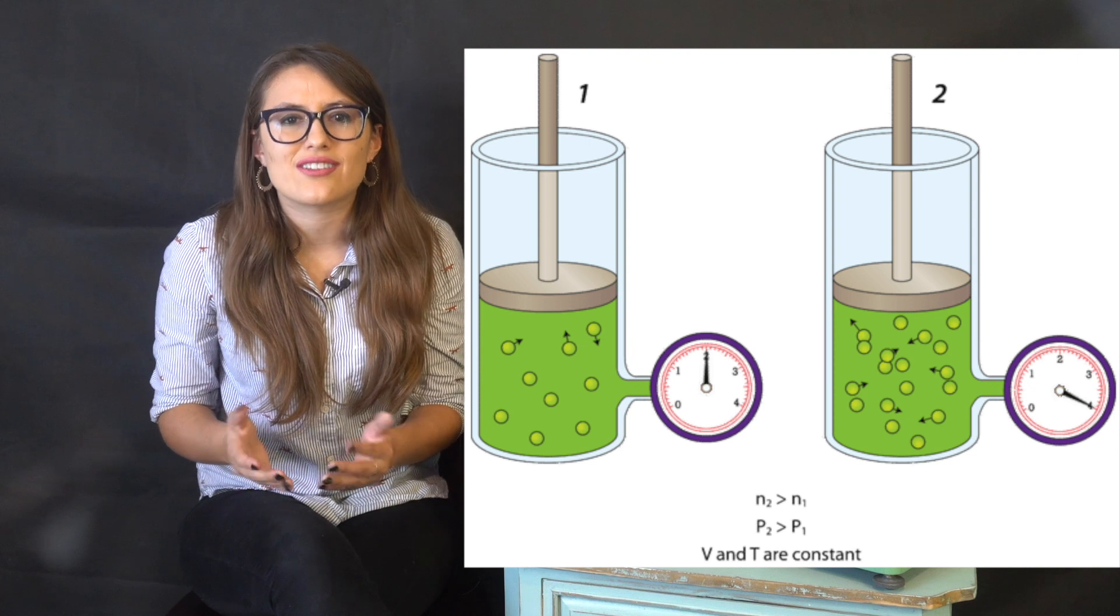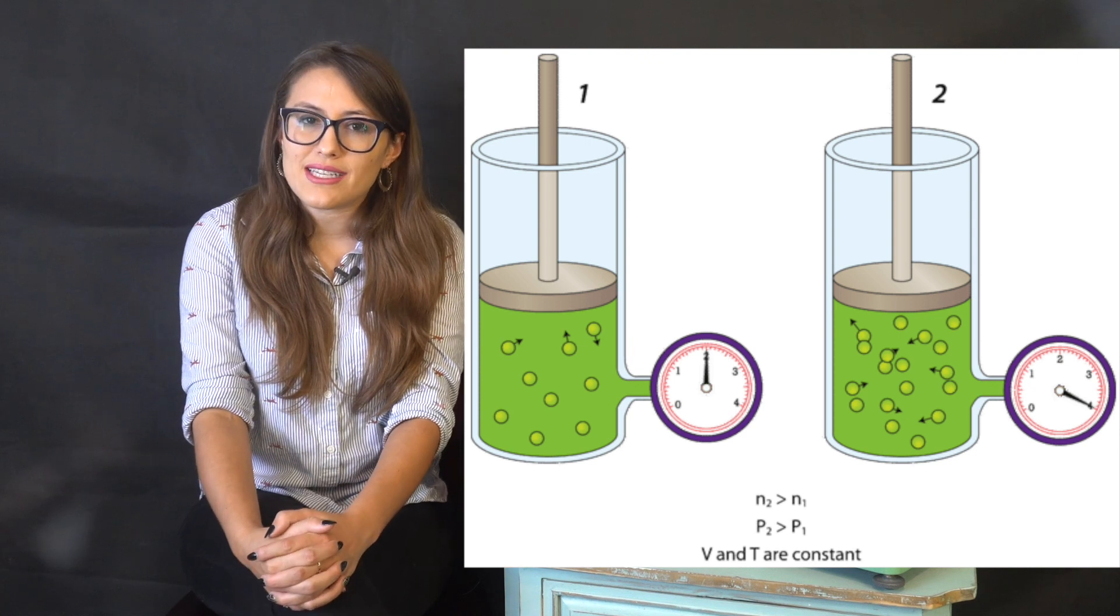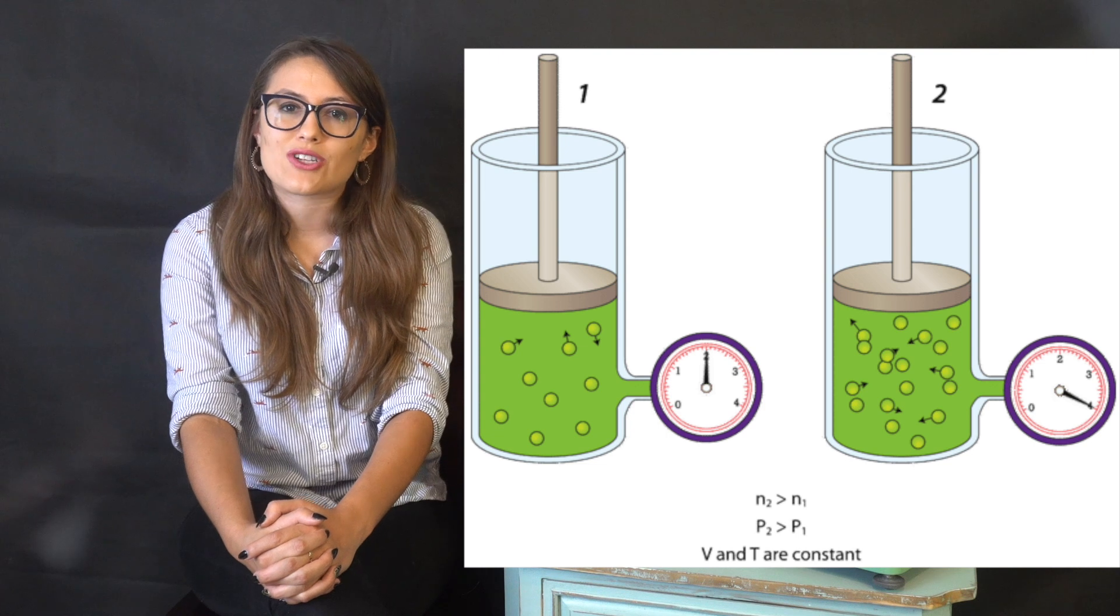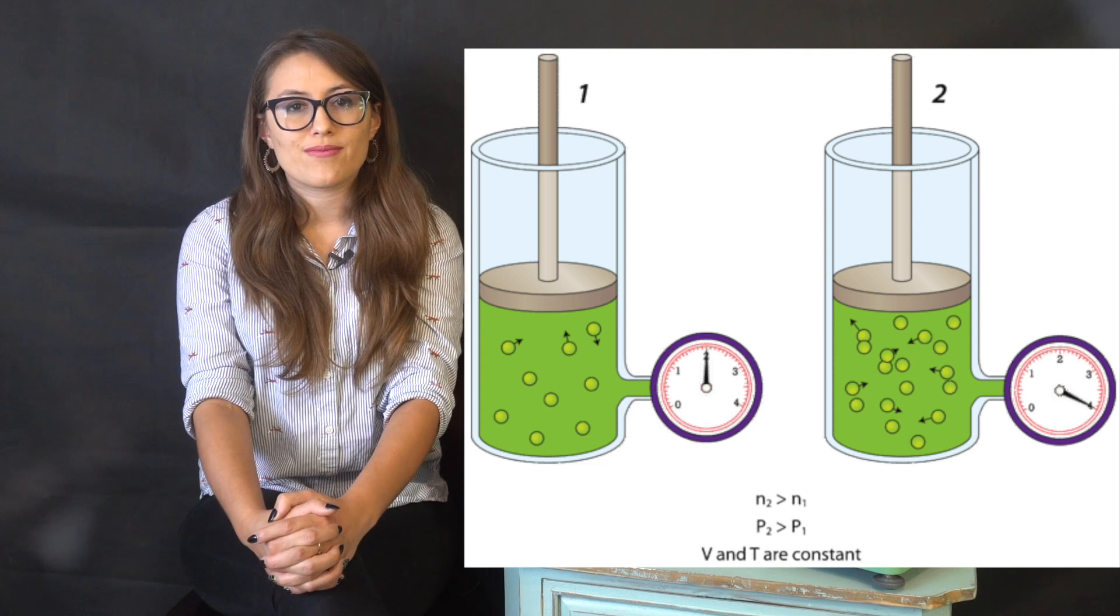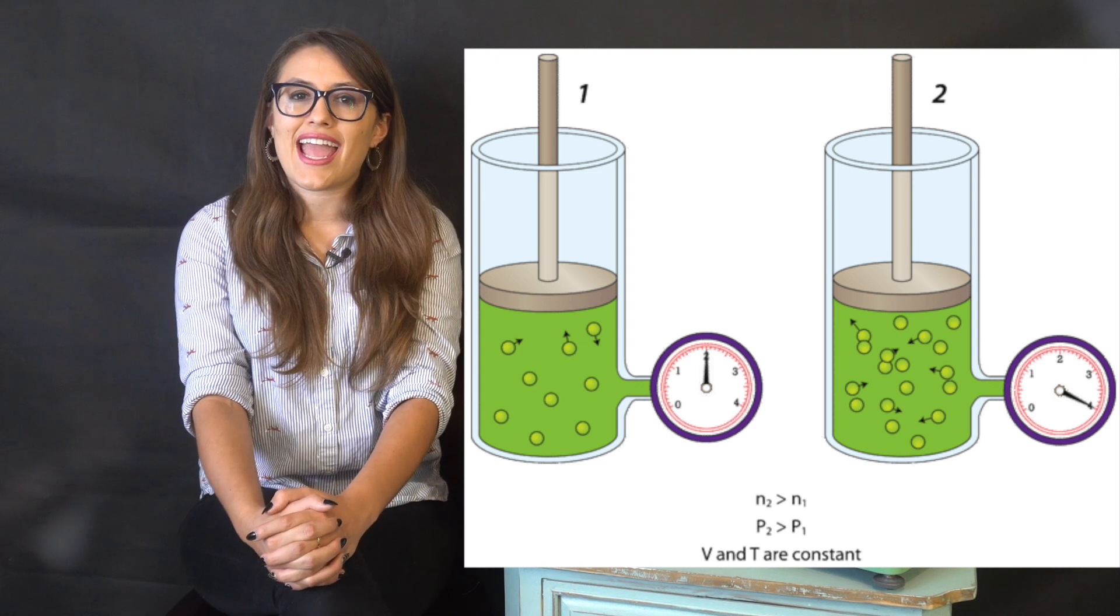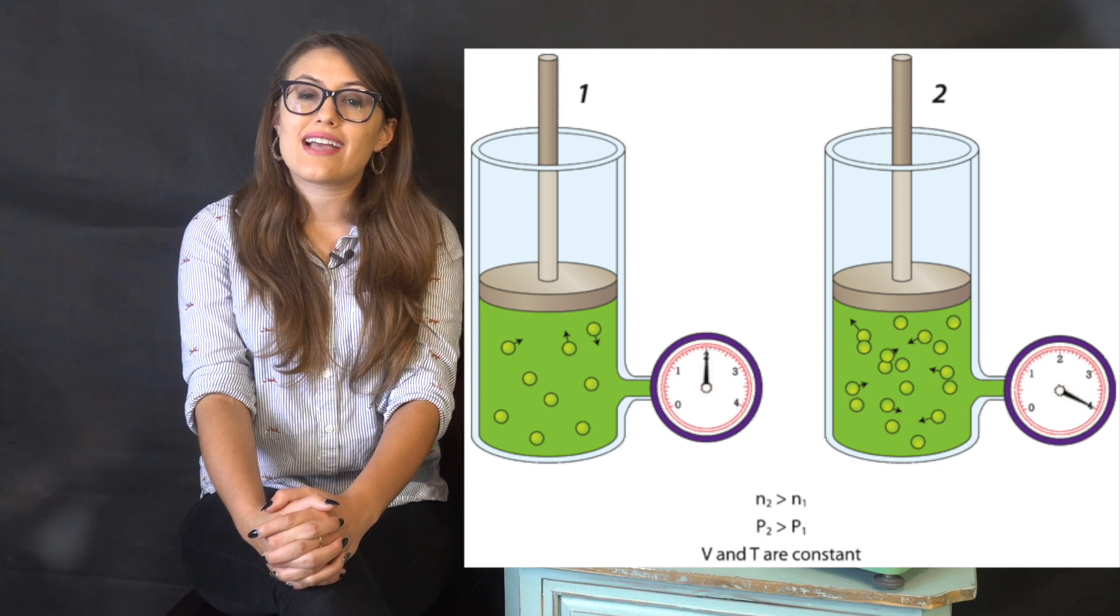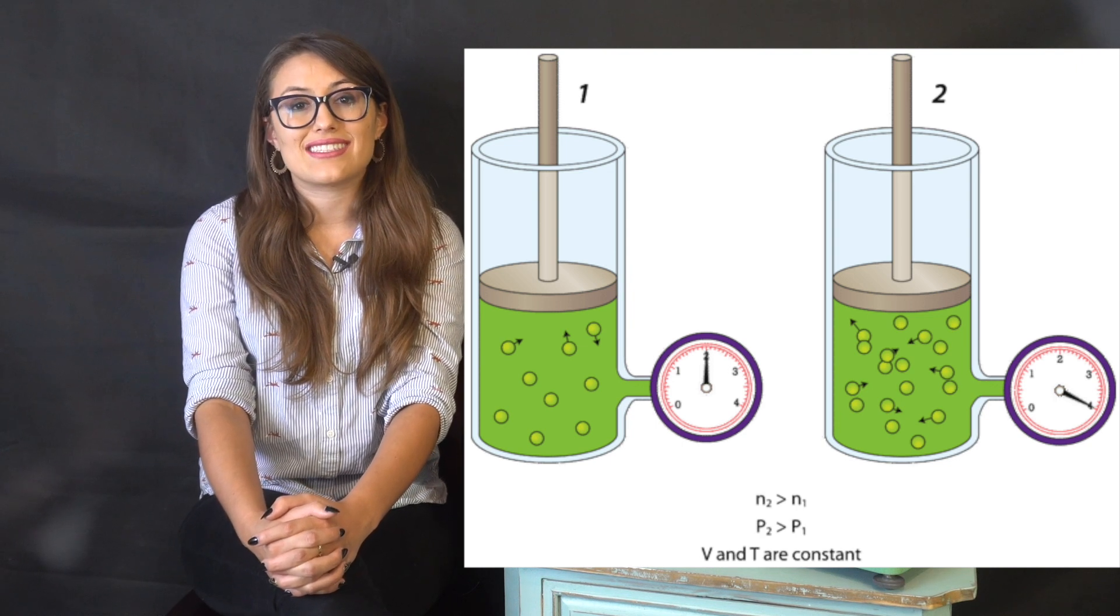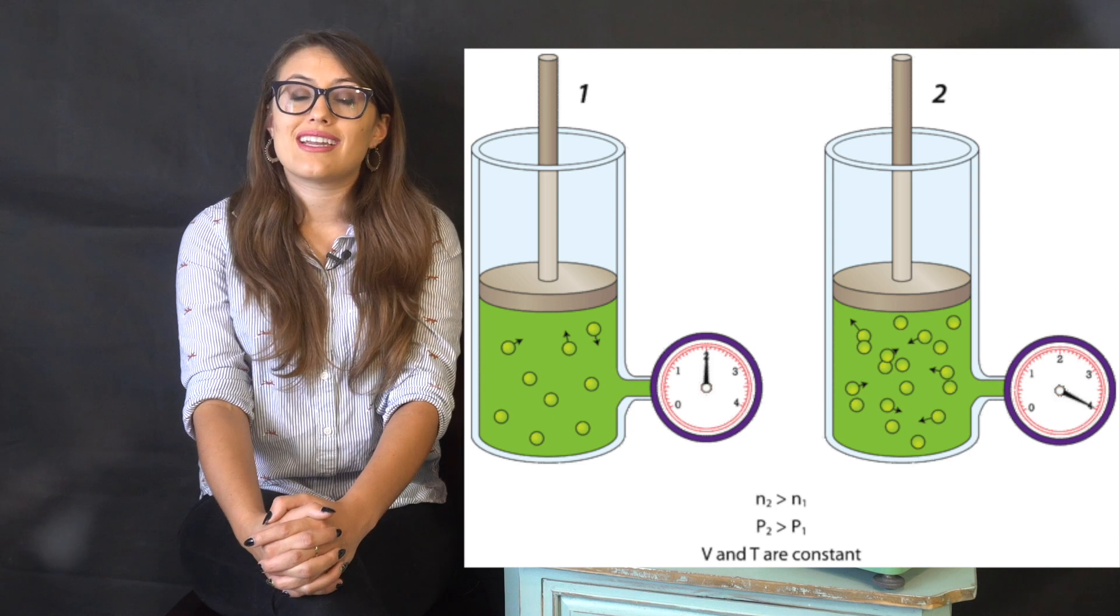Imagine we had two containers that are identical, A and B. The only difference is that in container A we have low pressure and in container B we have a high pressure. This means container A has a low pressure because it has a low density of gas particles and container B has a high density of gas particles, resulting in a high pressure.